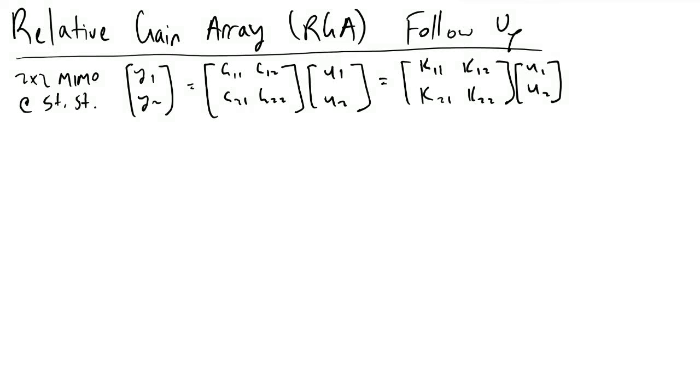To follow up on the introduction to relative gain arrays that I introduced previously, I'd like to go back to the 2x2 MIMO model that we discussed at steady state. As we'll recall, the 2x2 MIMO will have the form where we multiply our input vector by this transfer function matrix to evaluate how our outputs will respond.